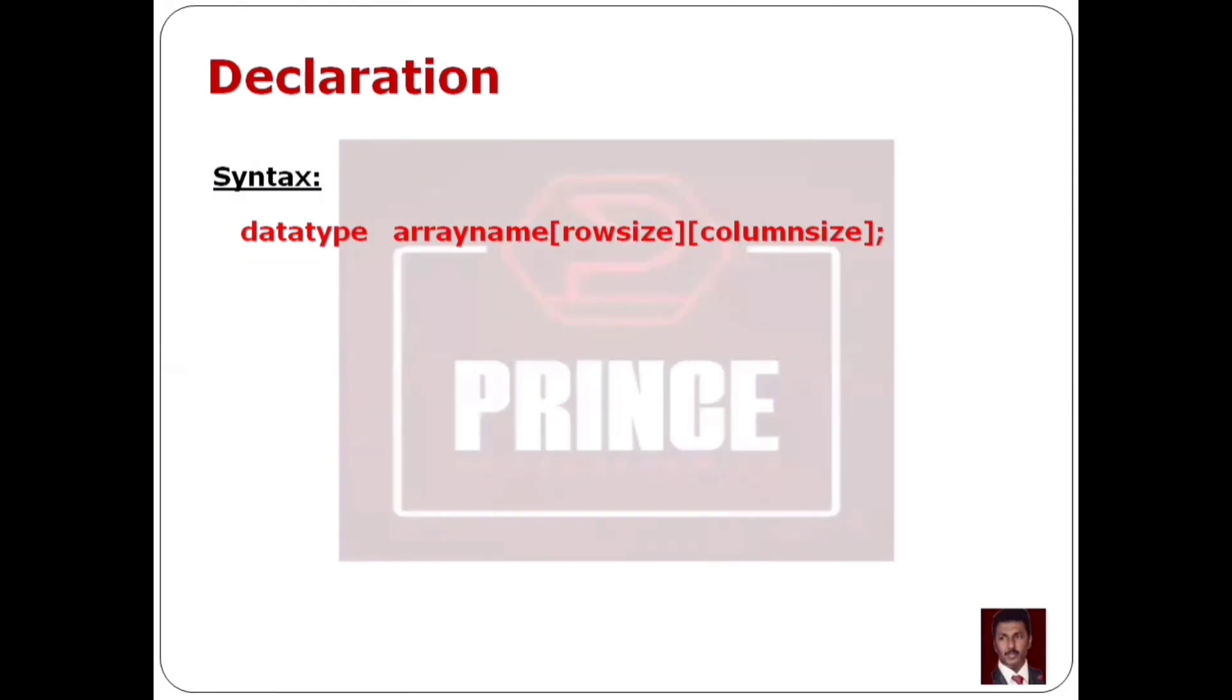If we have two dimensions, we will have two sides of the array. First, row size. Second, column size. We have two sides of the array.